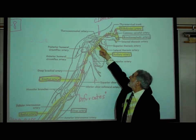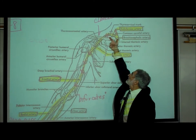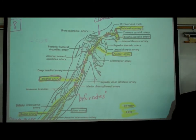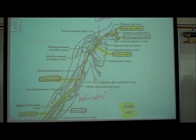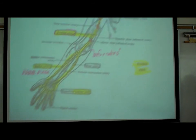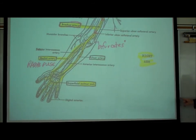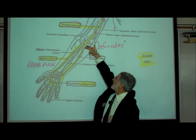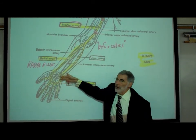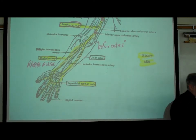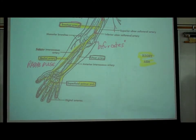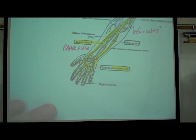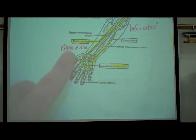So here it's the subclavian, here it's the axillary, here it's the brachial. The brachial artery bifurcates into a radial artery and an ulnar artery. The radial is on the thumb side, which in the anatomic position is lateral.